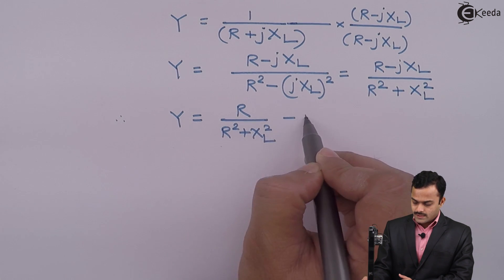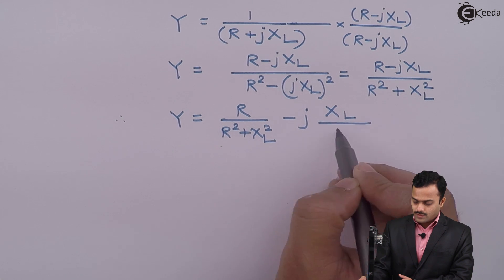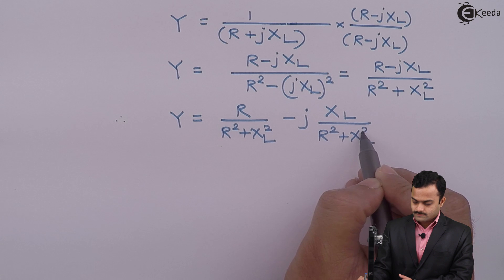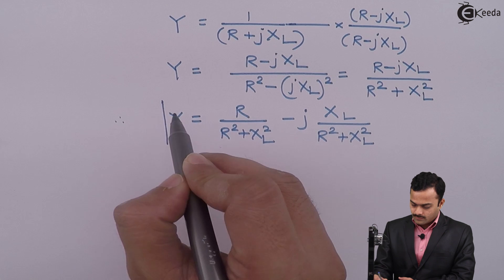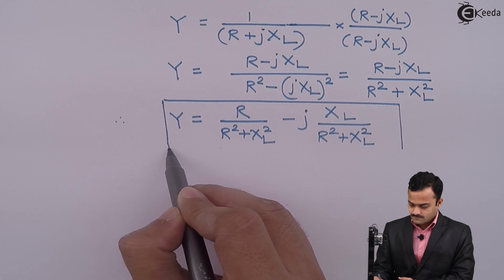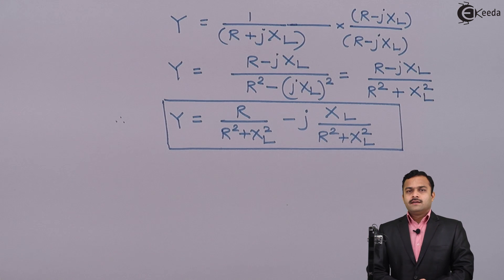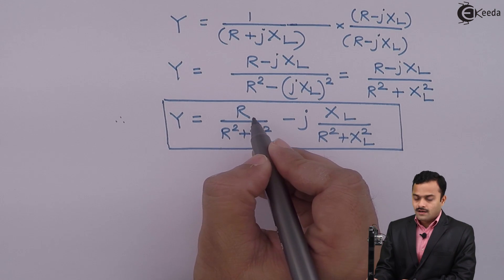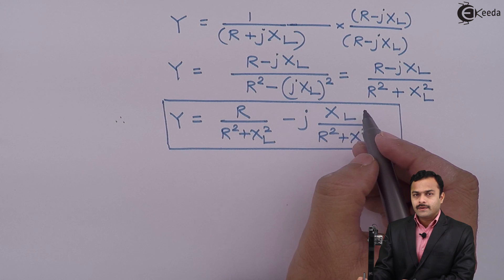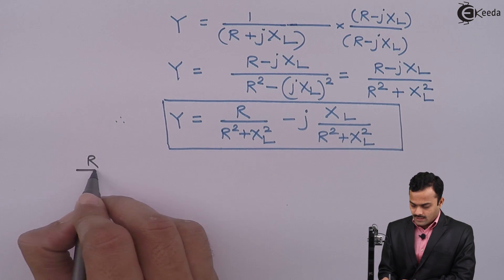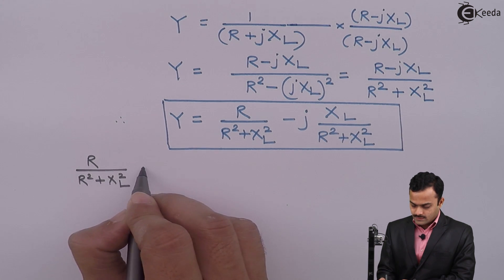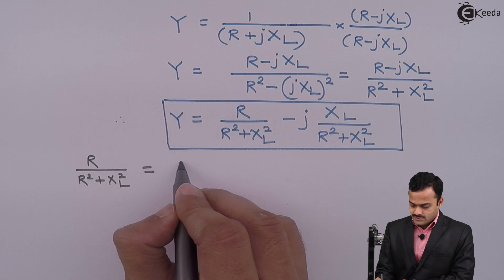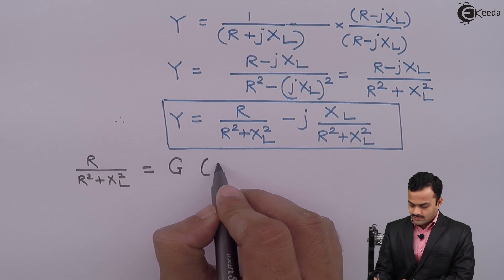This equals R/(R² + XL²) - j·XL/(R² + XL²). So this is the admittance of the inductive circuit. Here I am having two terms: one is real and the second is imaginary.